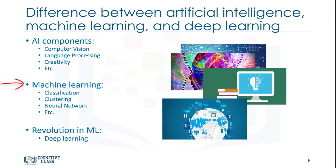Machine learning is the branch of AI that covers the statistical part of artificial intelligence. It teaches the computer to solve problems by looking at hundreds or thousands of examples, learning from them, and then using that experience to solve the same problem in new situations.